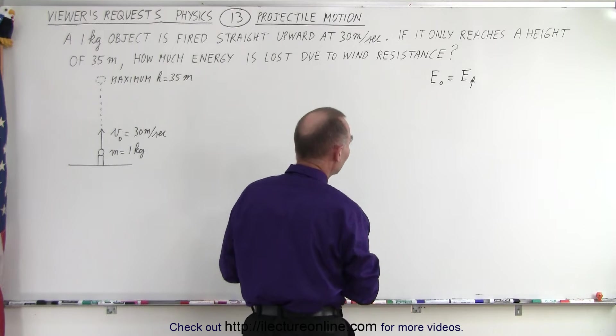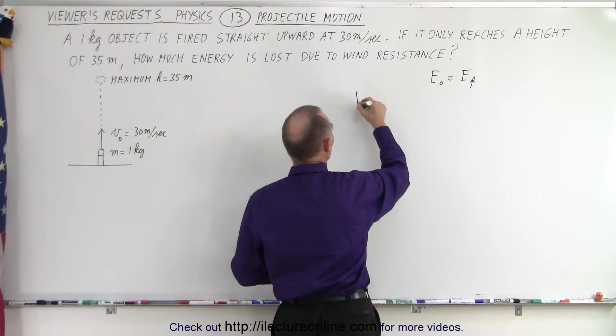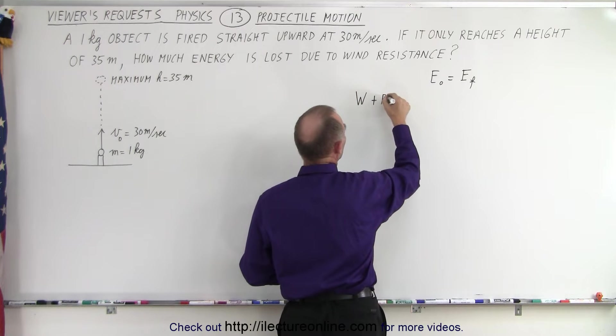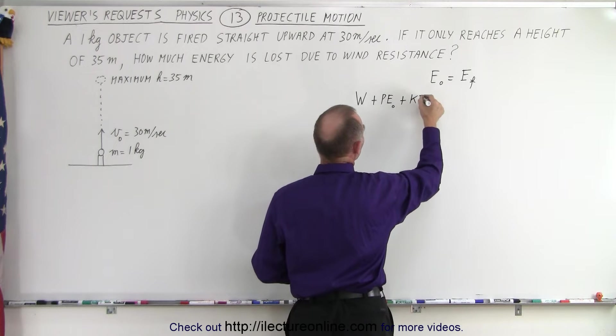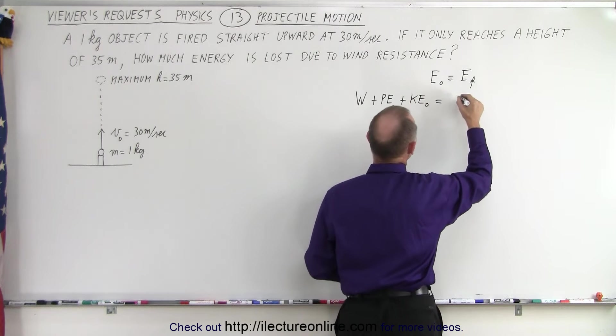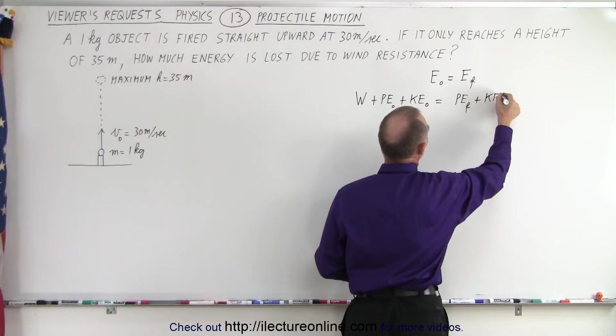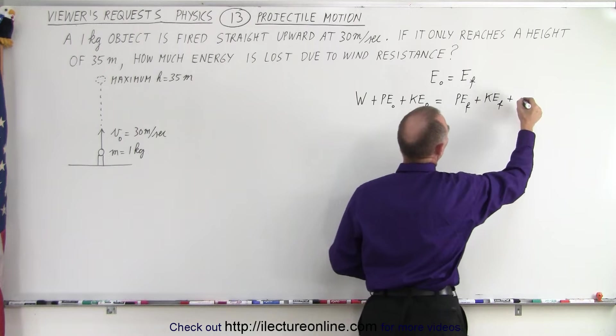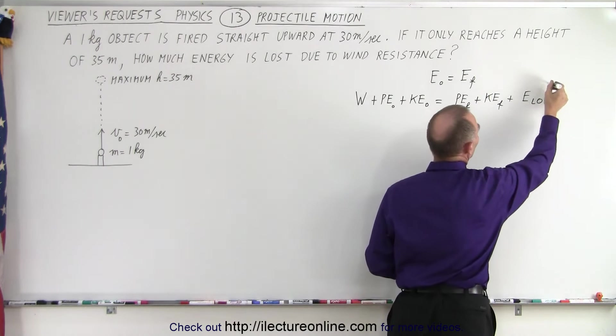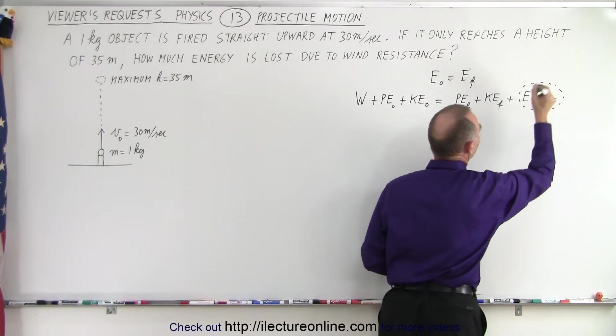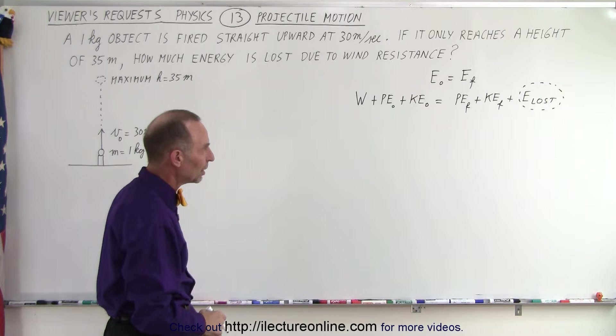Now in this case, that will not be it because we're only firing it off, but let's go ahead and write it in anyway. So any work put into the system plus any initial potential energy plus any initial kinetic energy, and of course that equals any final potential energy plus final kinetic energy plus any energy lost. And in this case, it would be the energy lost due to the wind resistance, and this is what we're looking for. That is the question. How much energy was lost? But that's the equation that we need.